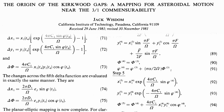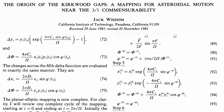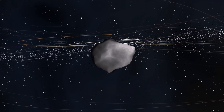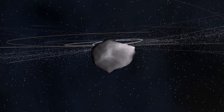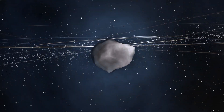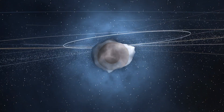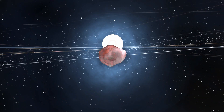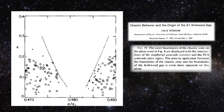What I did to study this problem was to invent a new integration method, and that allowed me to study the motion over much longer times than people had studied before. I found chaotic behavior in the motion of asteroids near resonances. The property of this chaotic behavior is that it's catastrophic — their eccentricities increase to the point that they cross planetary orbits and even fall into the Sun. So the chaotic orbits are all removed and the regular orbits remain, and that's what forms the Kirkwood gaps.